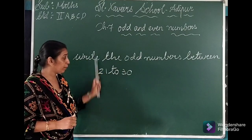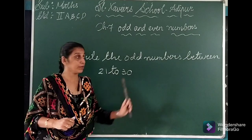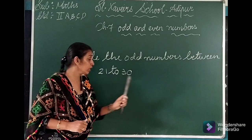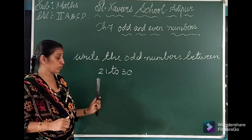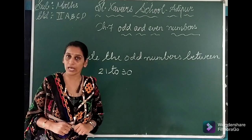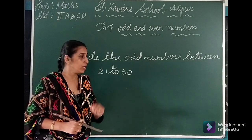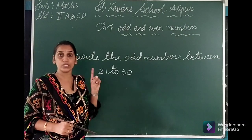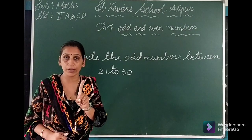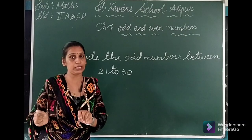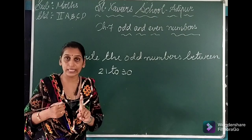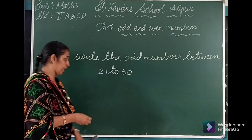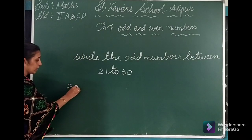Between 21 and 30, 'beach mein' means 'between.' We need to find the odd numbers between 21 and 30. After 21 comes 22. Is 22 odd or even? It's even, so we skip it. Then 23 — is 23 odd or even? Yes, so here we will write 23.